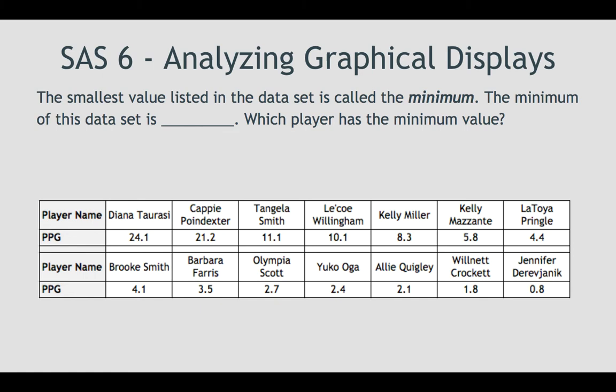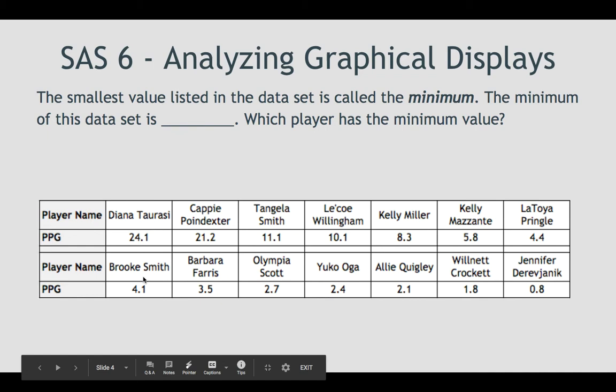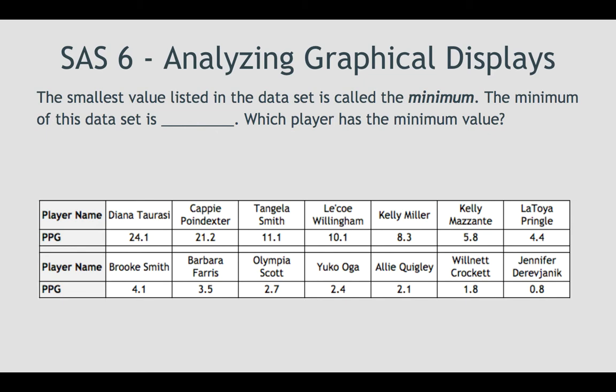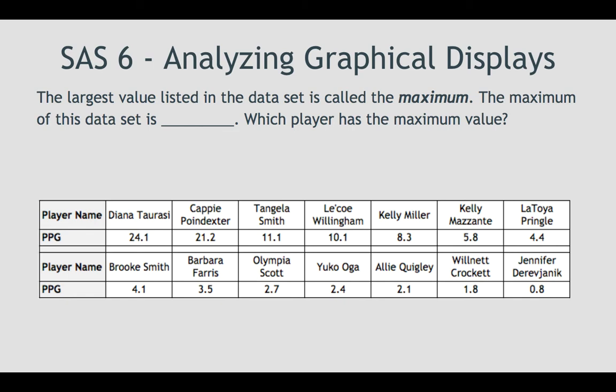These are all in sequential order from the player with the most points per game to the least. The player with the least amount of points per game is Jennifer Durevgenik at 0.8 points per game. The largest value listed in a data set is called the maximum. Dian Taurasi has the maximum value at 24.1 points per game.